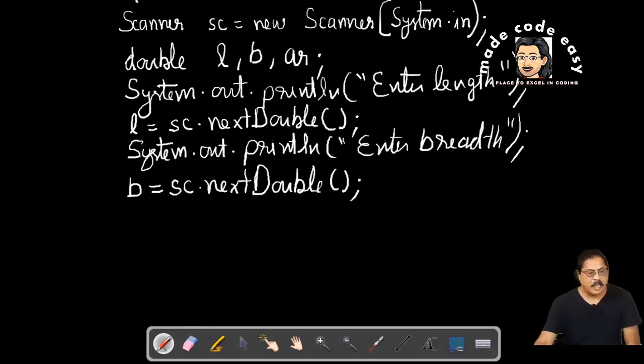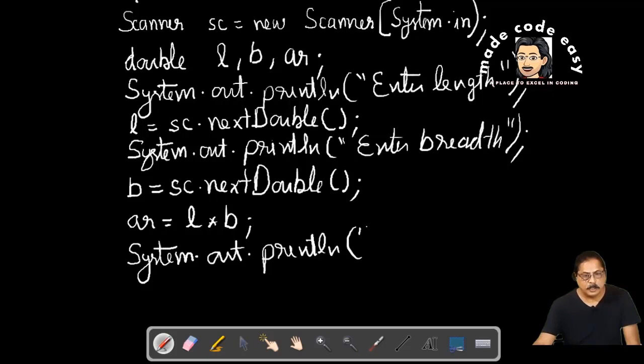Now we will calculate area: ar equals l into b. Then we write System.out.println area equals plus ar.